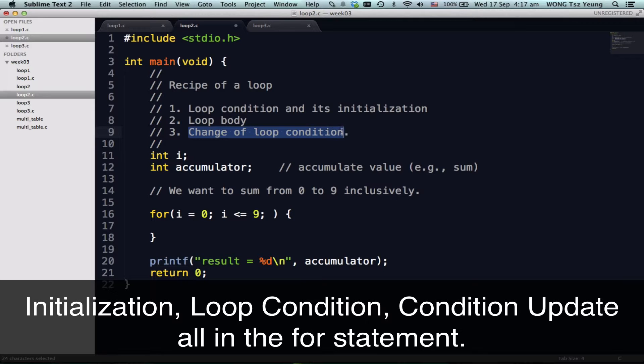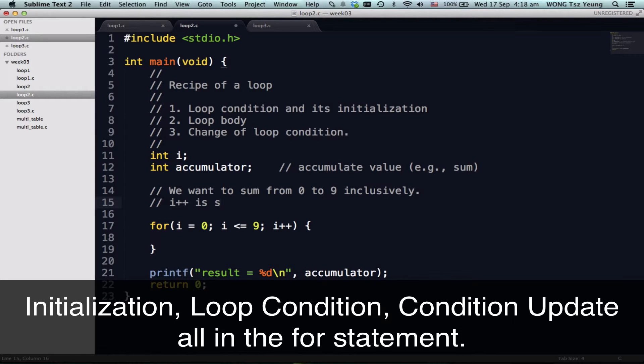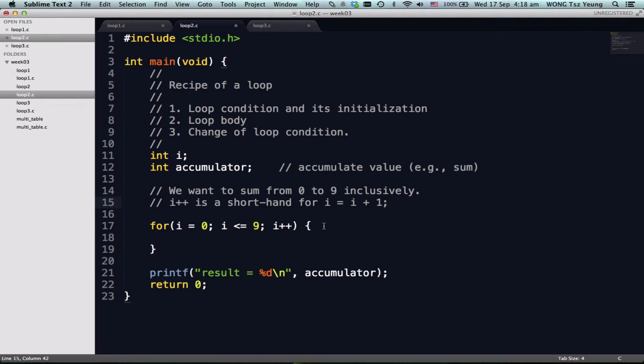we have to add in the change condition statement. To change the condition, if we are using for loop, we usually write this. So what is i++? i++ is a shorthand for i equal to i plus 1. So we finished most part of the for loop. We have done this. We have done this. So what's the missing part? The body.